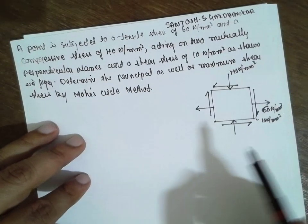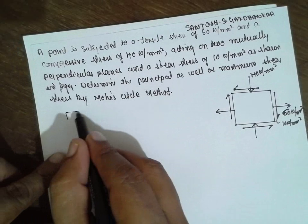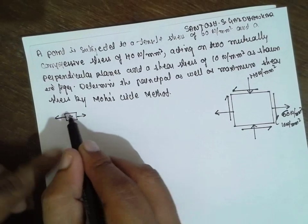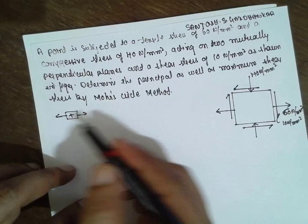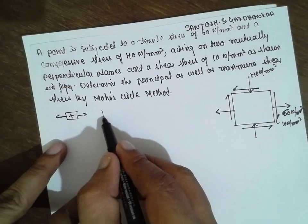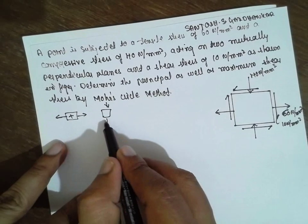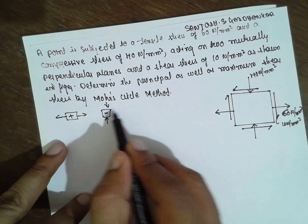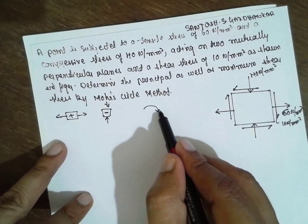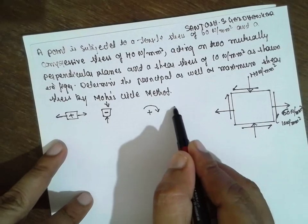First, I will consider: if the arrows are away from each other, I will consider it positive. Towards each other, I will consider it negative. If the shear is rotating in clockwise direction, positive; anti-clockwise direction, negative.